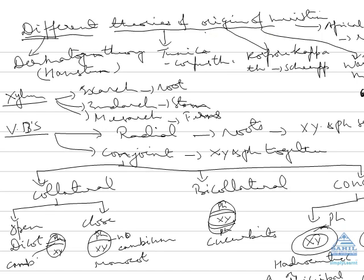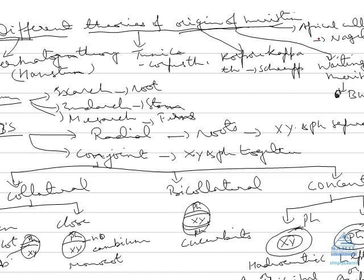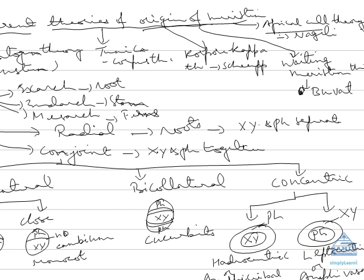Now we are going to discuss the different theories of origin of meristem. First theory was given by Nageli, which was apical cell theory. According to this, only apical cell is dividing due to which the entire plant is formed, but this theory is not valid in case of angiosperms while it is valid in lower plants.